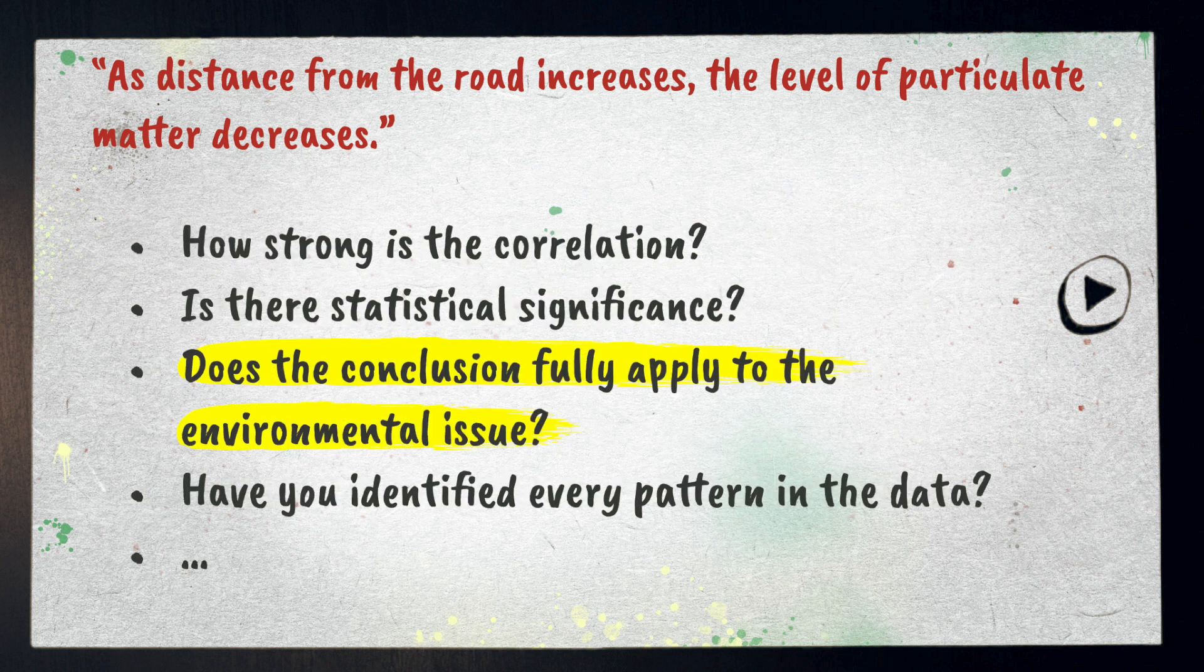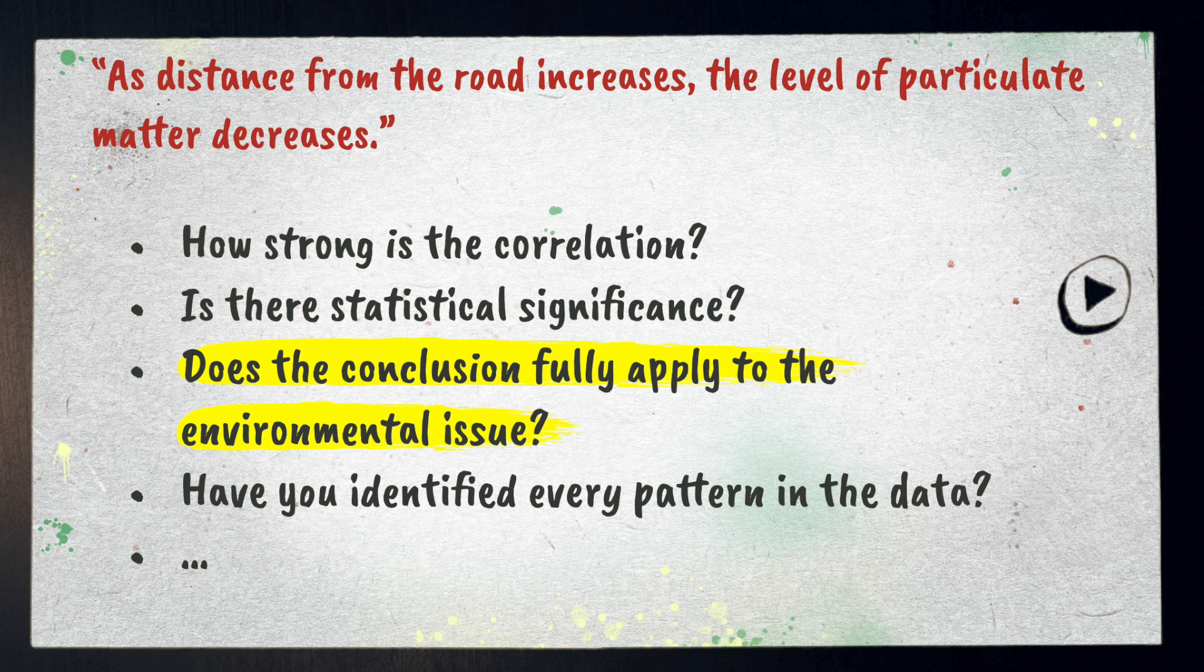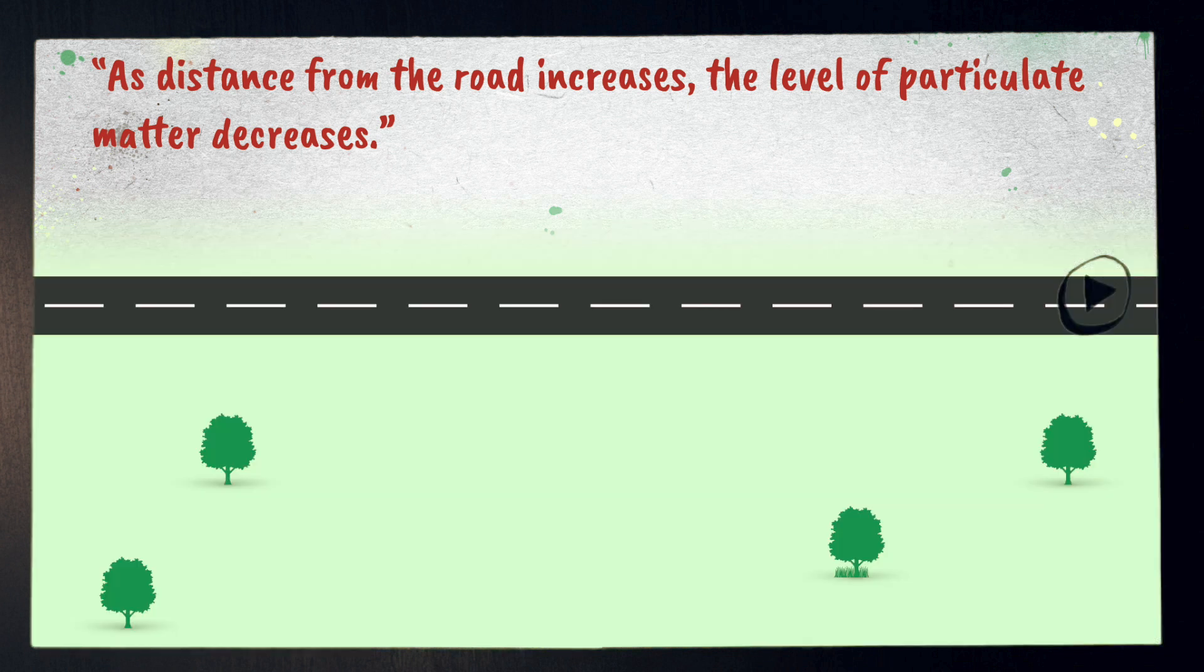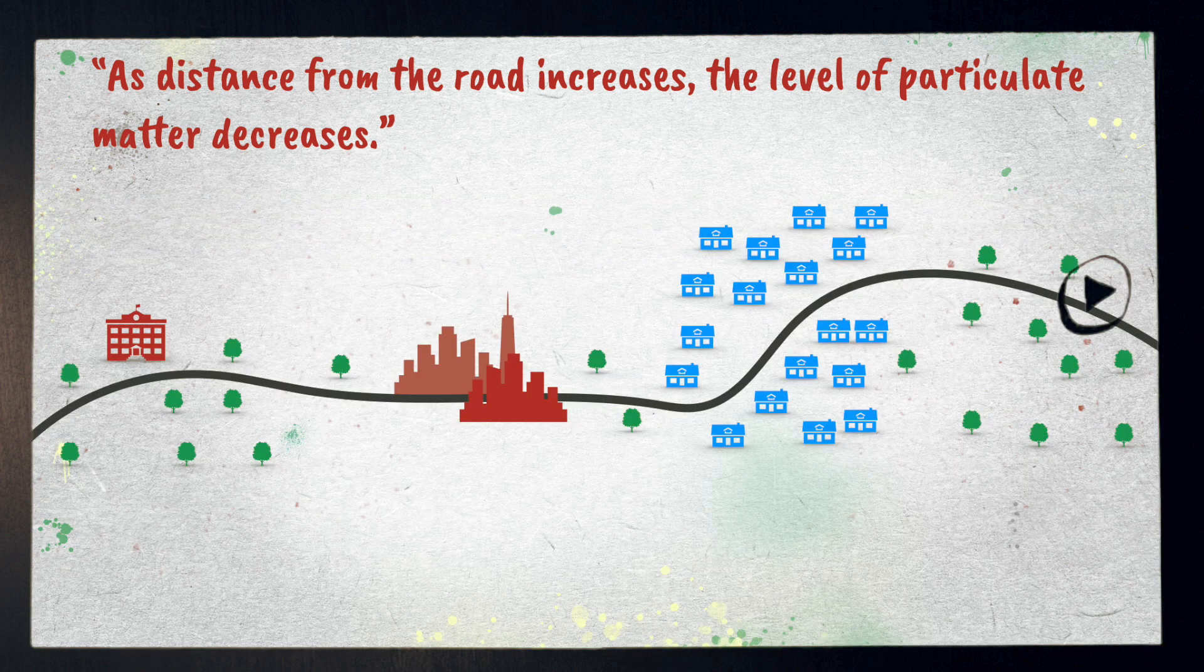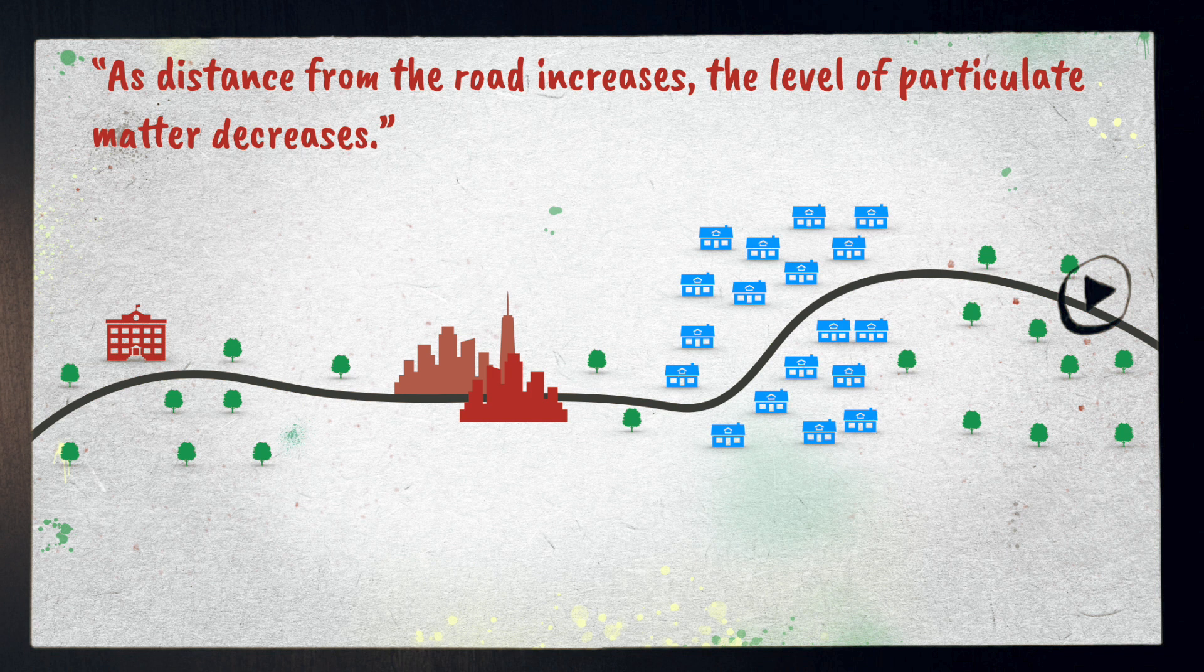Next, we might make a statement on how well the conclusion applies to the environmental issue. For this one, let's remind ourselves of where we collected data. If we look at a map of the surrounding area, we might see that in addition to going past the school, the road runs through a central business district, a residential area, and then on through a rural area.